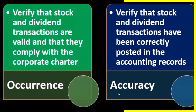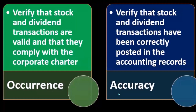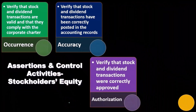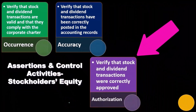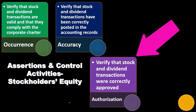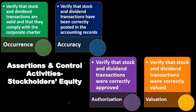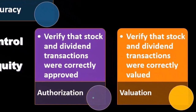We want to make sure that transactions are correctly posted in the accounting records in an accurate format. For the assertion of authorization, we want to verify that stock dividend transactions were correctly approved — did we go through the approval process? Stock dividend transactions are a major type of transaction, so there should be a formal approval process.